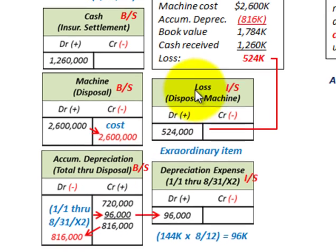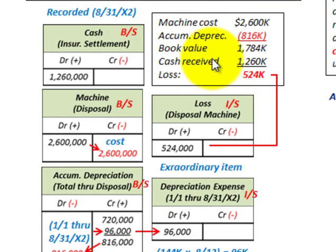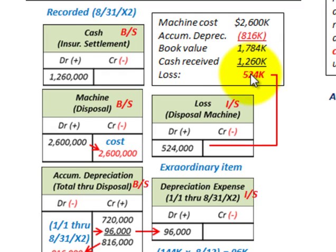We also have to determine a gain or loss. In this case it's going to be a loss on our income statement, calculated as follows: the machine cost less the accumulated depreciation to date gives our book value. The cash received from the insurance settlement is less than the book value, so we have a loss of $524,000, which we debit or increase on the income statement.